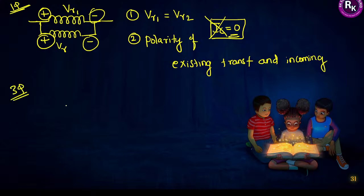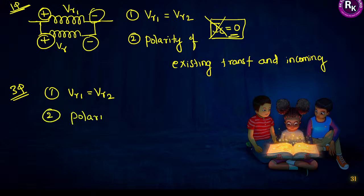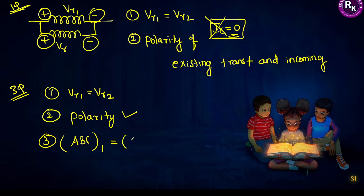Those are the two conditions for single-phase parallel operation. For three-phase transformers, a few more conditions apply. First, rated voltage of the existing and incoming transformer should be same. Second, polarity of both transformers should be same. The additional condition is that the phase sequence of the existing transformer and the incoming transformer should be same — that is very important. If the existing transformer operates in sequence ABC, you must not bring a transformer with sequence ACB.